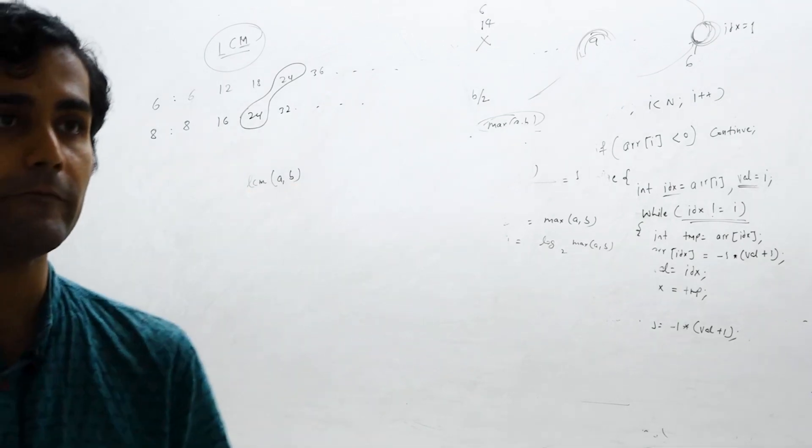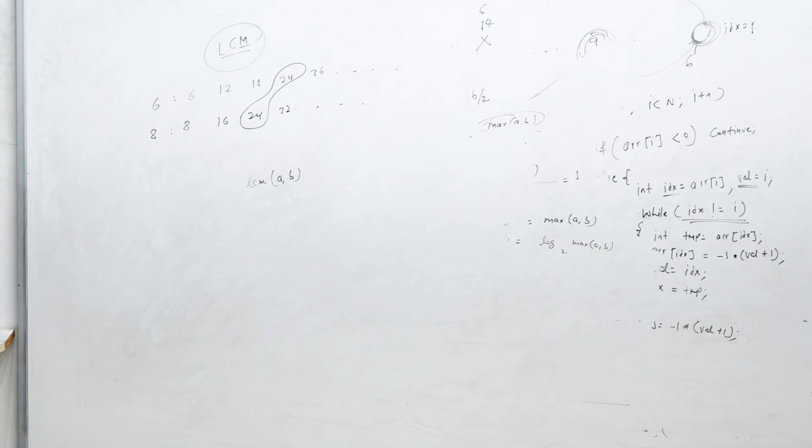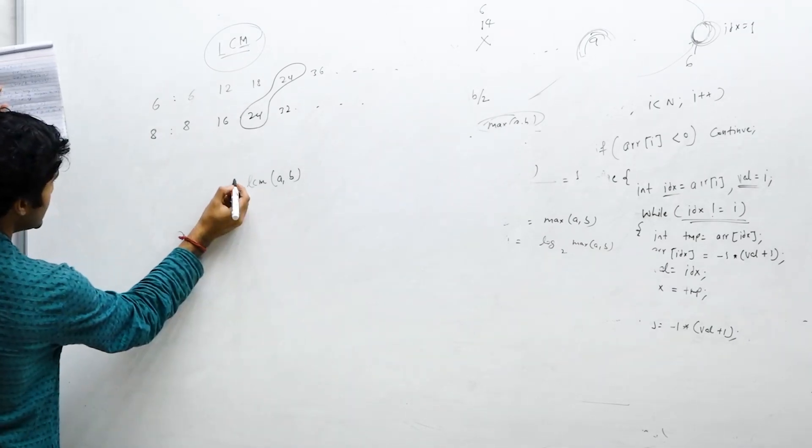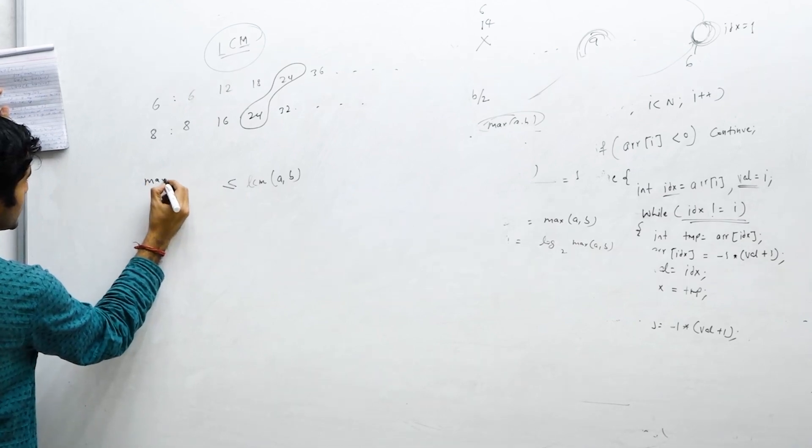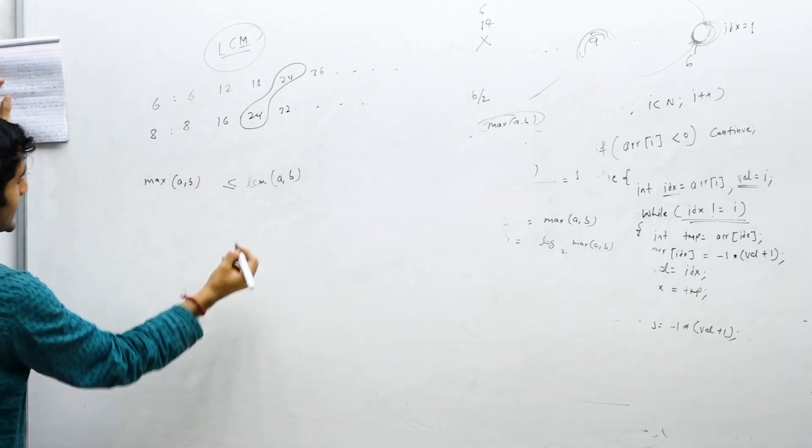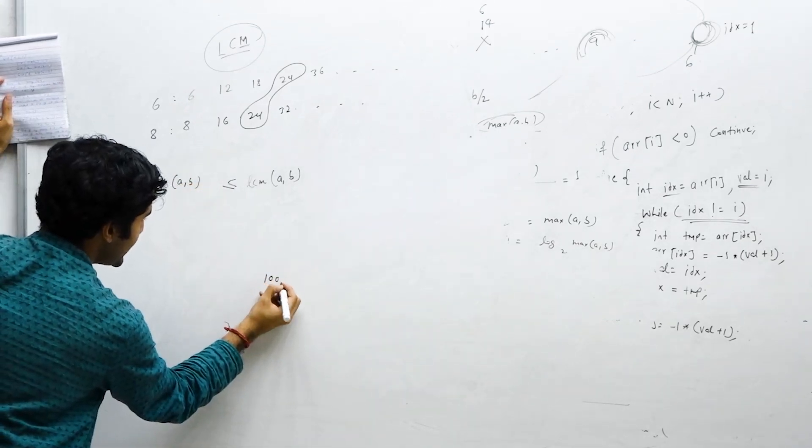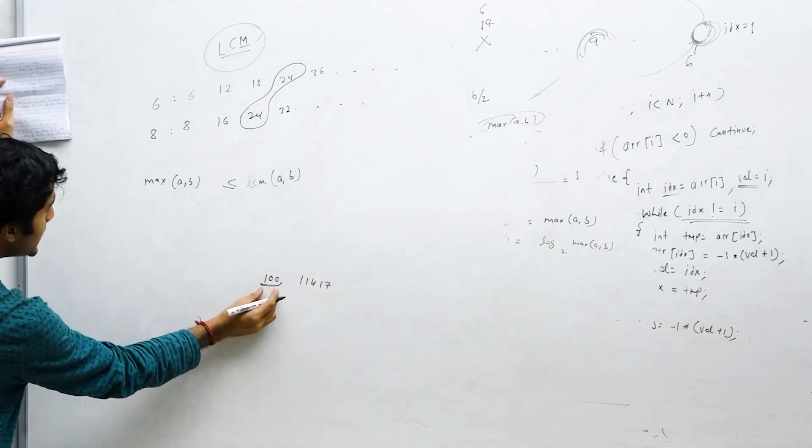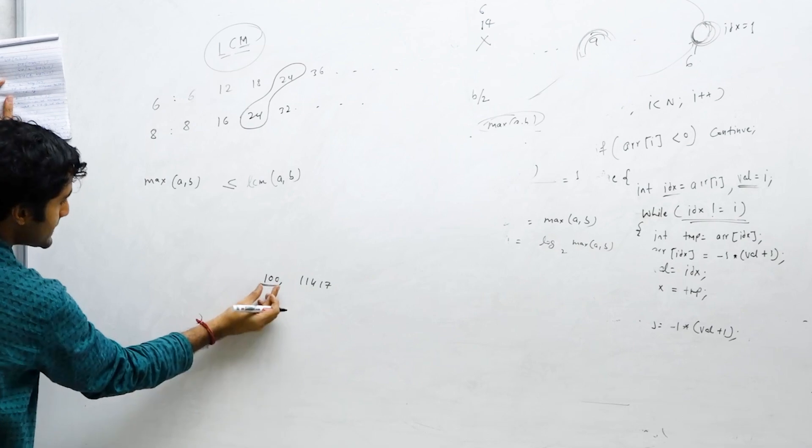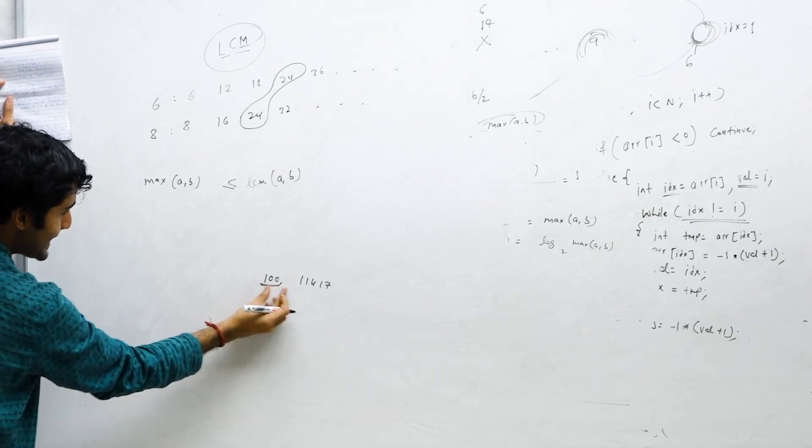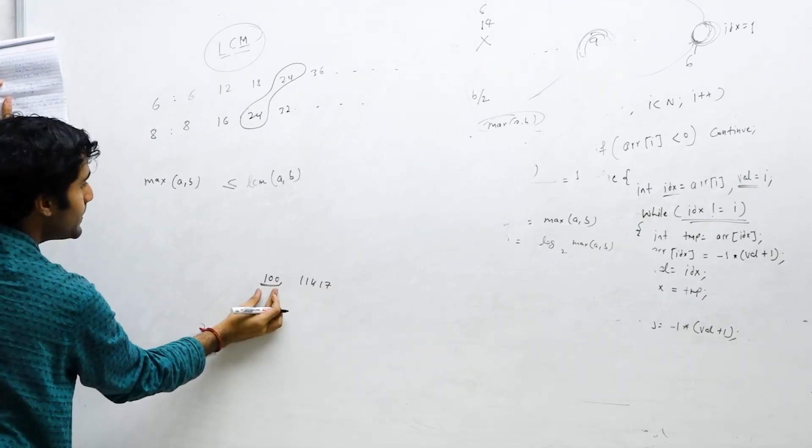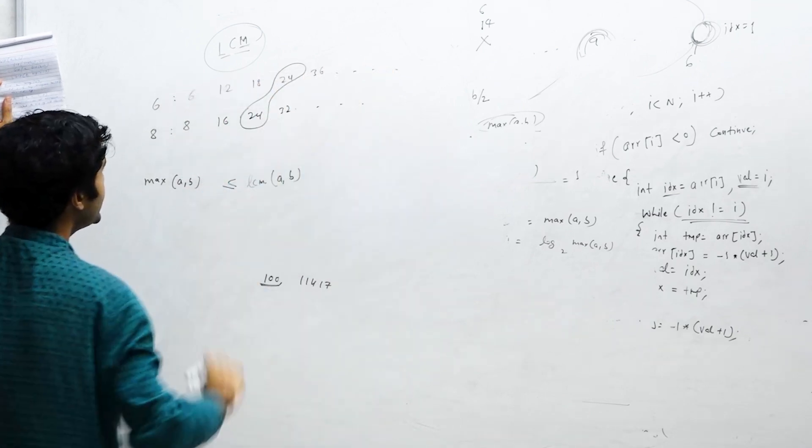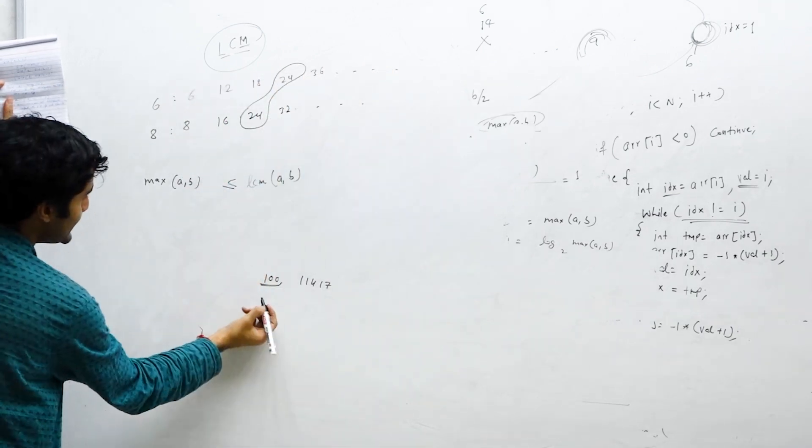What could be the minimum value of LCM of two numbers? The minimum value will be greater than or equal to max of a comma b, because it can never happen that you have two numbers like 100 and something smaller, and the smaller number happens to be the common multiple. A smaller number can never be a multiple of a larger number. Multiples are always greater or equal.